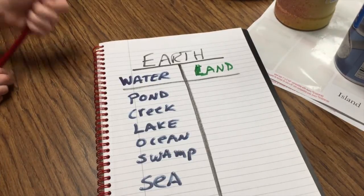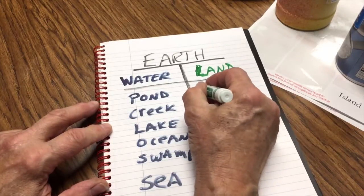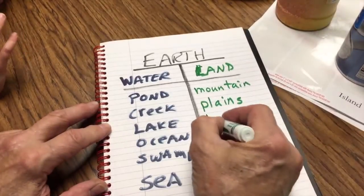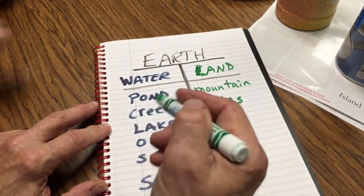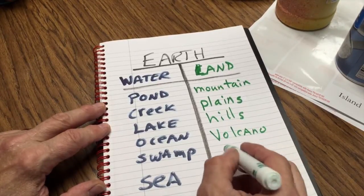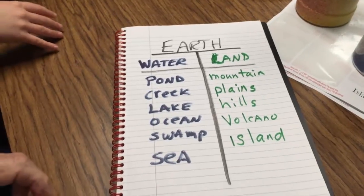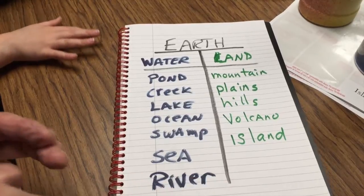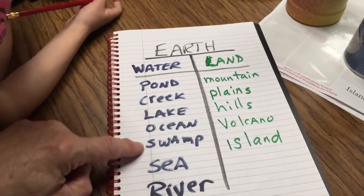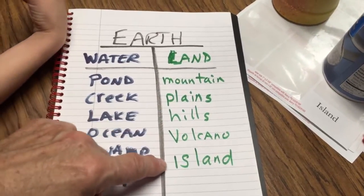Now what about land features? What's a land feature you might see? Something big with snow on it that's hard to climb. A mountain. Plains — they're flat. Hills. What's a thing that lava comes out of? Volcano. Everybody loves a volcano. And something surrounded by water on all sides — islands. And we left out on the water something you can get in a boat — a river. So these are all features. Read them again: pond, creek, lake, ocean, swamp, sea, river. And land: mountains, plains, hills, volcanoes, islands.